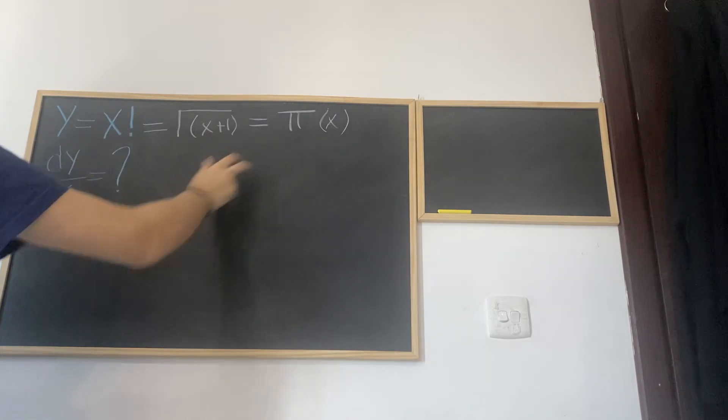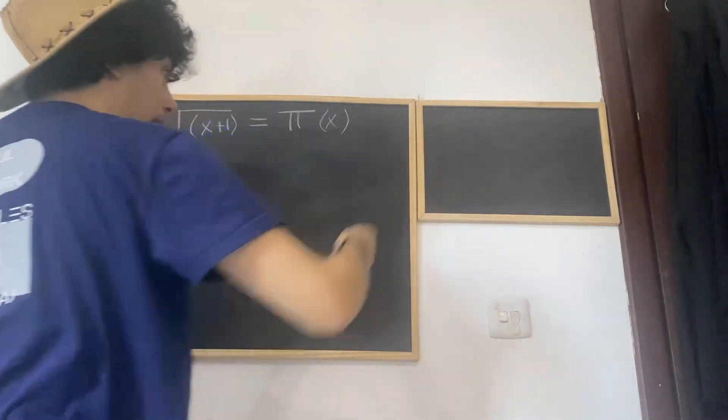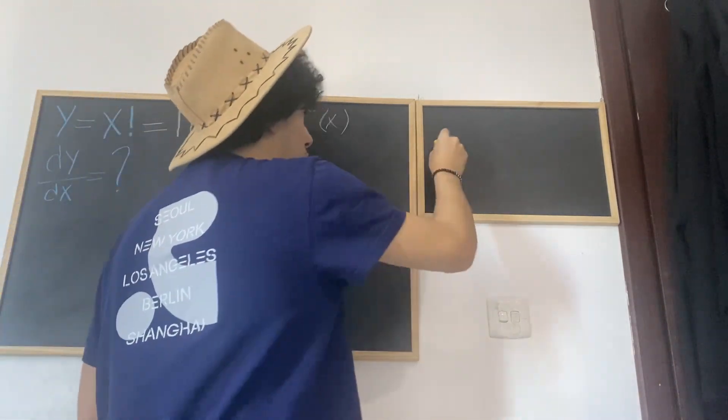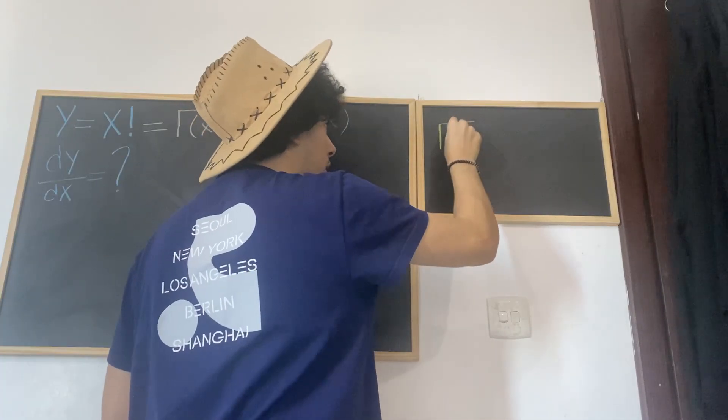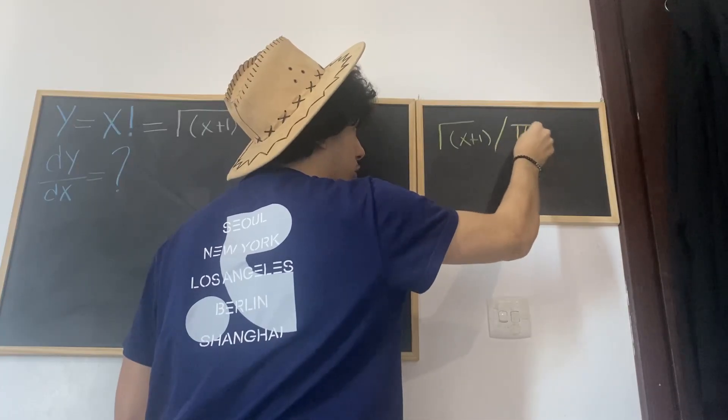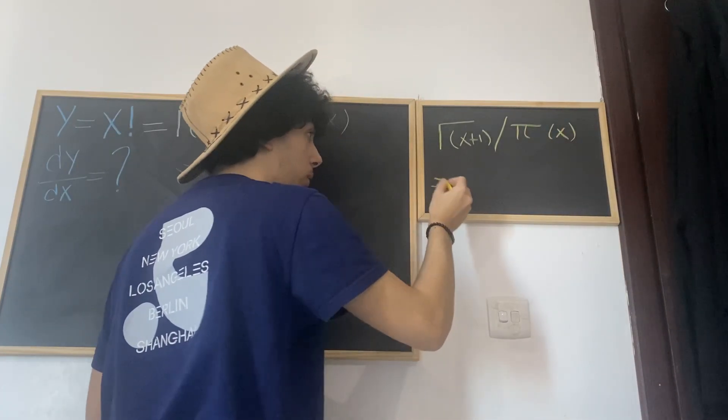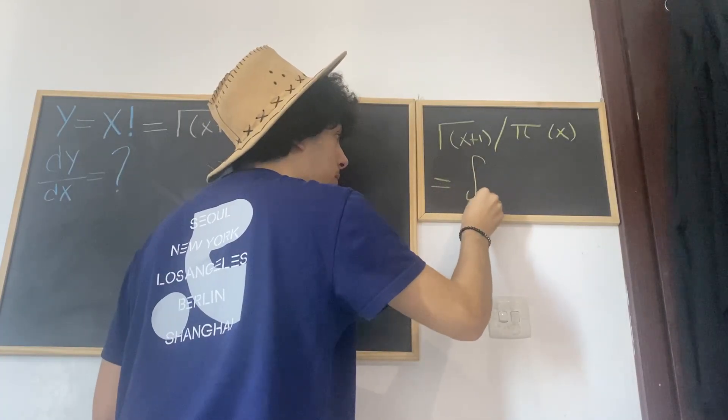However for this video we only need to know one thing, and what these two functions equal. Let me show you what they equal on this small board right here. So the gamma function of (x+1), or the pi function of x, is equal to the integral from 0 to infinity of t^x multiplied by e^(-t) dt.